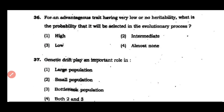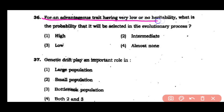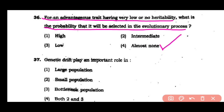Question number 36: For an advantageous trait having very low or no heritability, what is the probability that it will be selected in the evolutionary process? Options: high, intermediate, low, or almost none. The answer is option 4 — if there is no heritability for a trait, it will almost certainly not be selected in future generations.